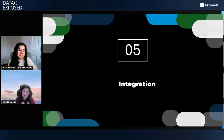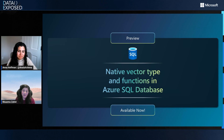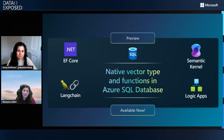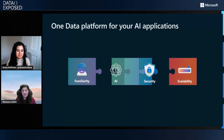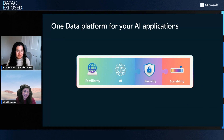The last thing is the integration story — bringing it all together. It's easier to bring AI to data than to bring data to AI. We now have native support for most famous libraries and frameworks: LangChain, Semantic Kernel, and EF Core. For low-code or no-code RAG applications, you can use the integration with Logic Apps. All of this brings together your familiar SQL engine with AI, built-in security, and the scalability you know and rely on — one data platform for your AI applications.